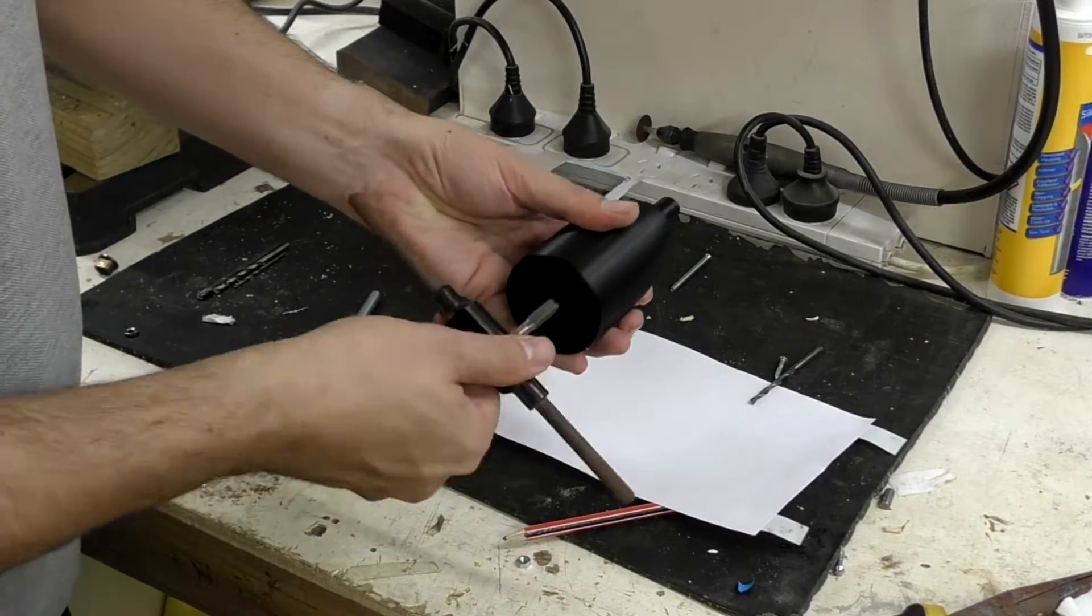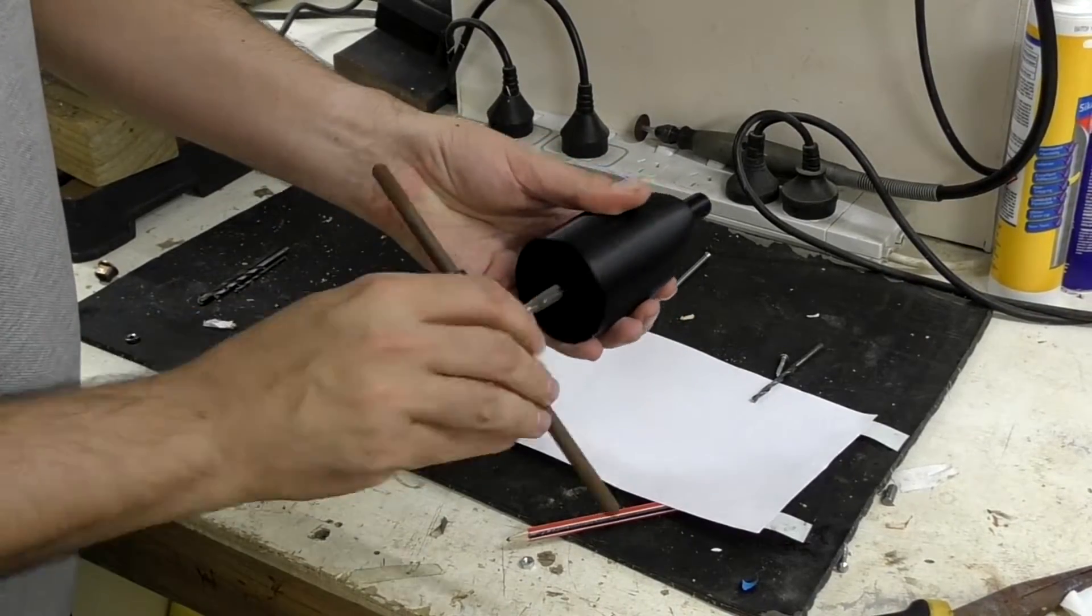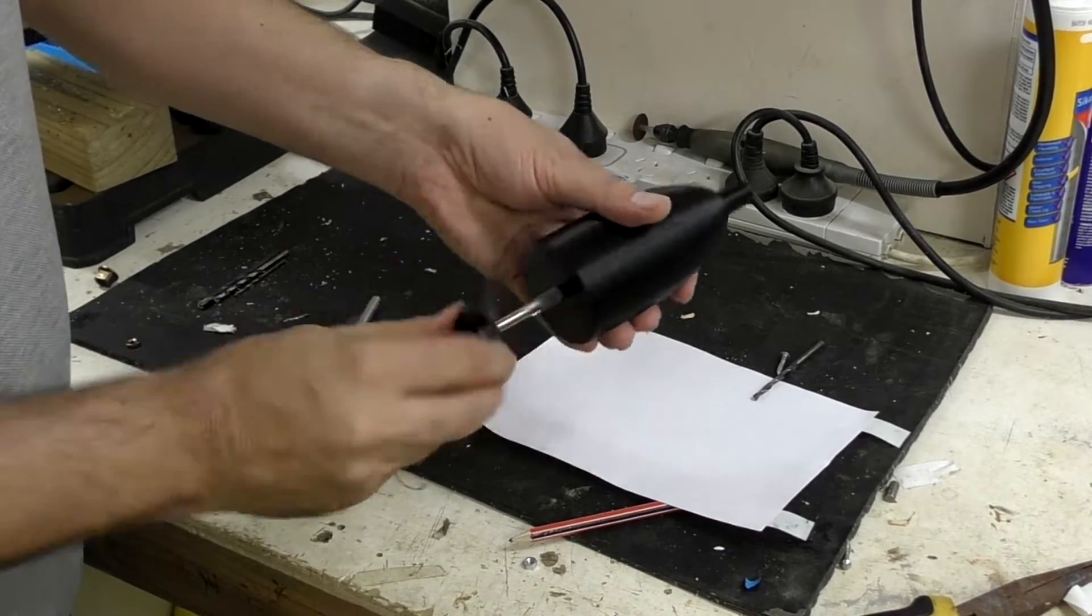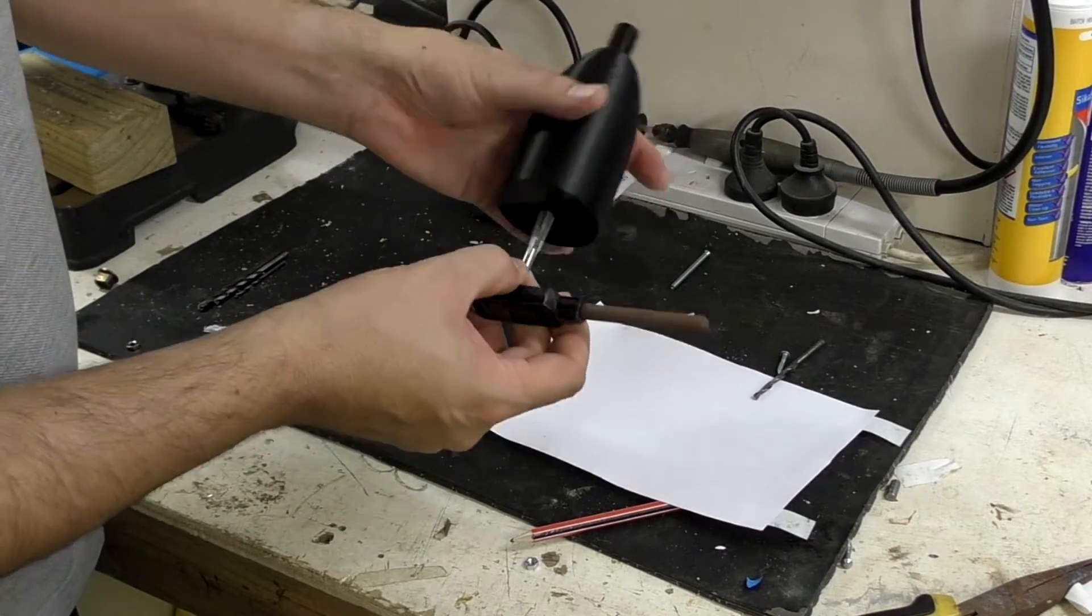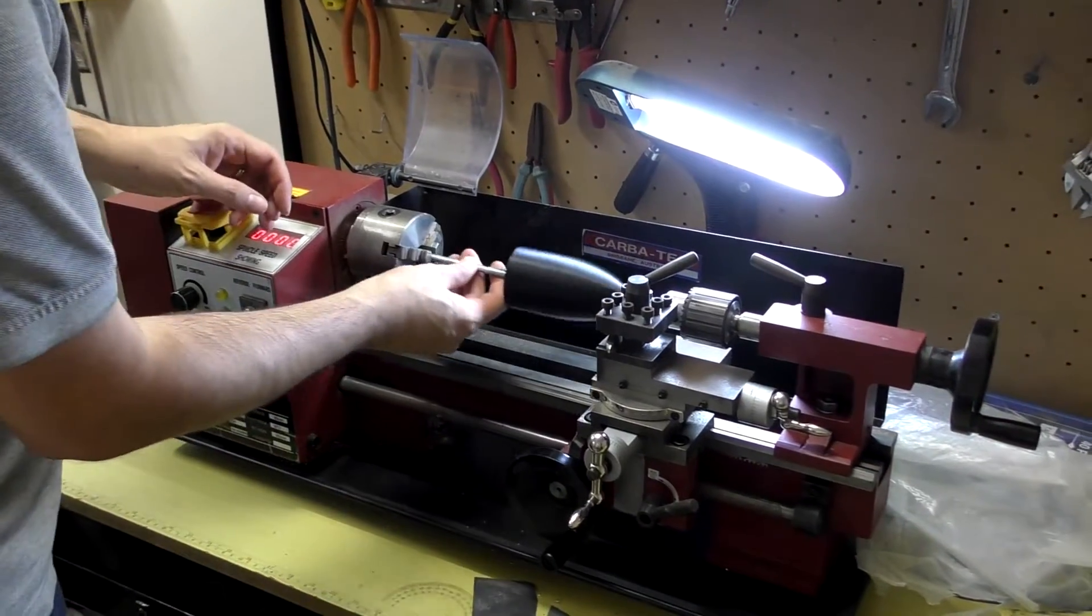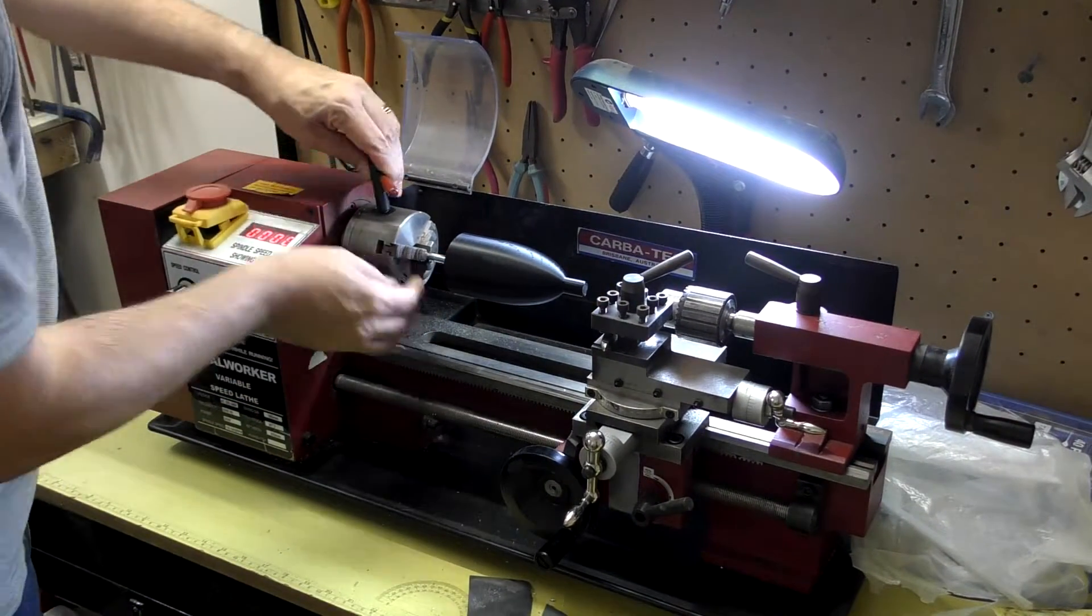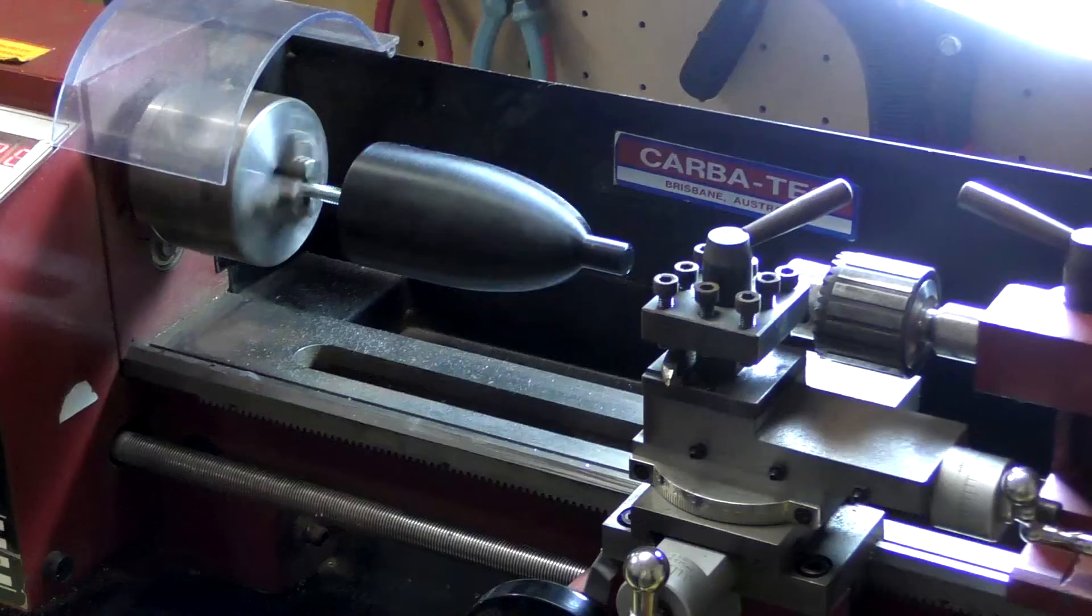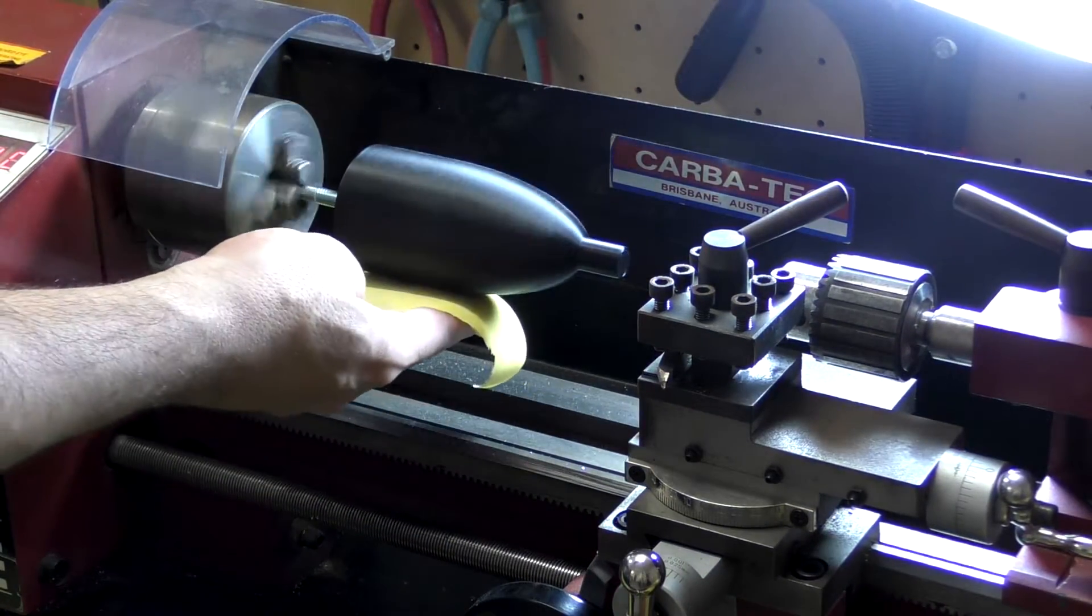Next we prepare the nozzle end cap mold. This again is 3D printed. We tap the hole at the bottom so that we can screw in a bolt that lets us easily hold the mold.